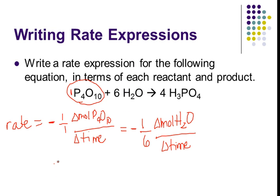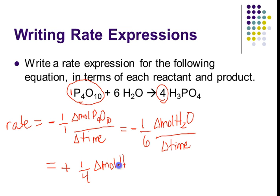H₃PO₄ is a product, so it's going to have a positive rate anyway — we don't have to do any correction. But its coefficient is four. So we write one-fourth, change in moles of H₃PO₄ over the change in time. We want to get the same value no matter what we're doing. In the same amount of time, I'm going to have four moles of H₃PO₄ formed for every mole of P₄O₁₀ that reacted. But the rate of the reaction is the same, so I'm equalizing the numbers.